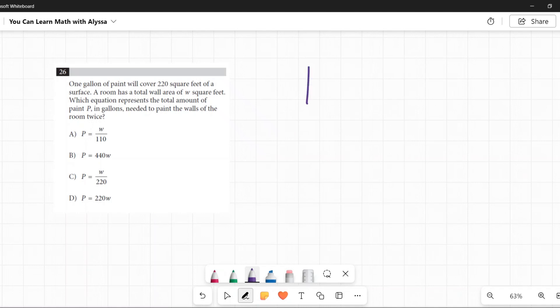Okay, so I know one gallon is 220 square feet. Writing that down. A room has a total wall area of W square feet. Let's pretend for a second that W is equal to, let's say, 400.